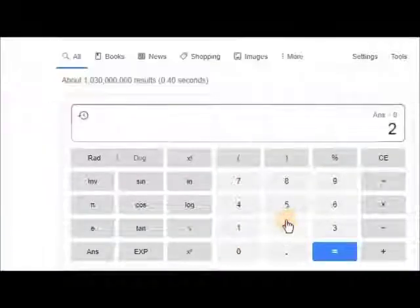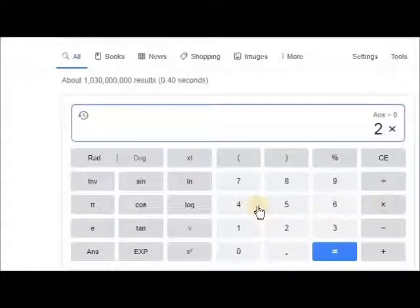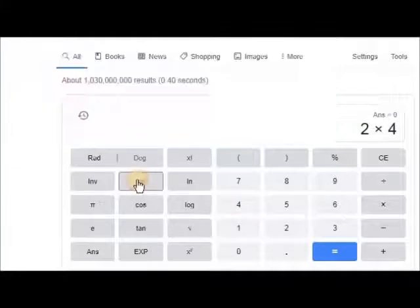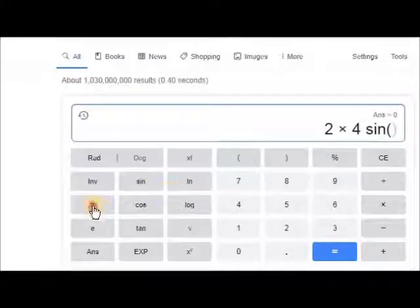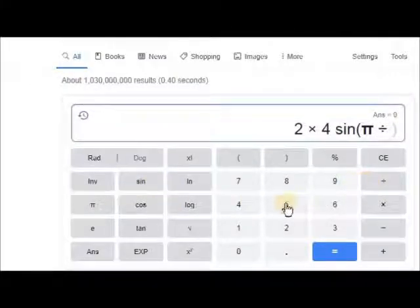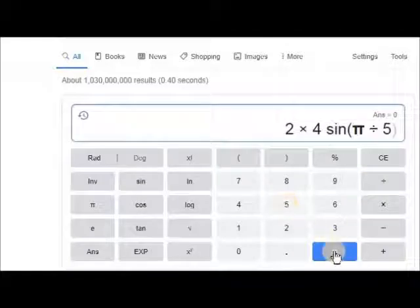Side length A will equal 2 times the radius, which is 4, times the sine of pi divided by 5, the number of sides, equals... that is the answer.